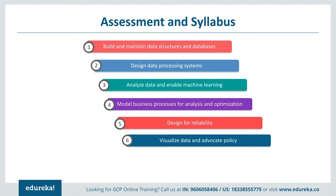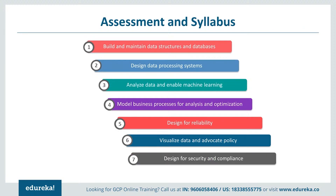Section 6 is Visualizing Data and Advocating Policy, covering building and selecting data visualization and reporting tools, automation, decision support, and data summarization including translation, chain fidelity, trackability, and integrity. Section 7 is Designing for Security and Compliance, covering identity and access management, data security, penetration testing, separation of duties (SoD), security controls, and designing for legal compliance. This final section is common to both the Cloud Architect and Professional Data Engineer certifications.